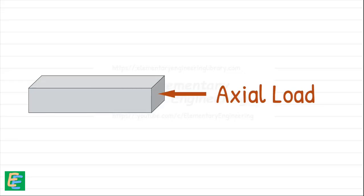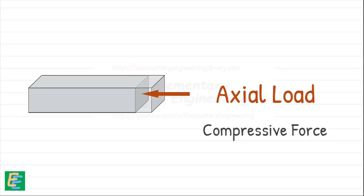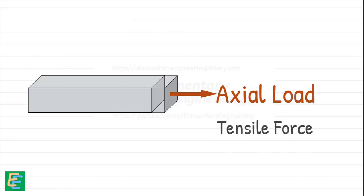A pushing axial force compresses the body. We call this a compressive force, and it results in shortening of the body's length. Conversely, a pulling axial force stretches the body. This is a tensile force, and it causes the body's length to increase.